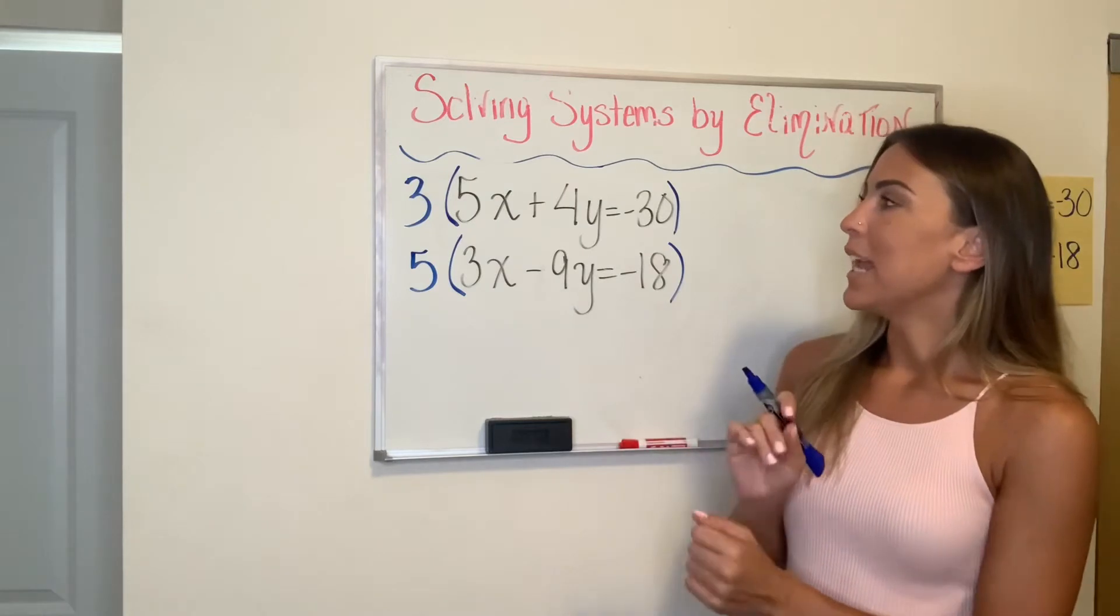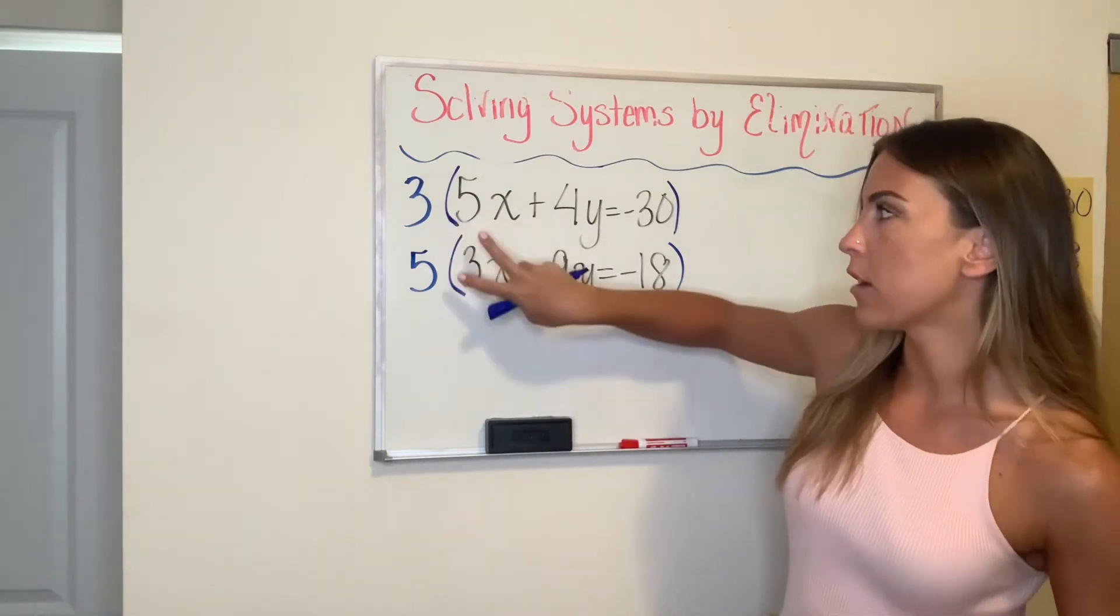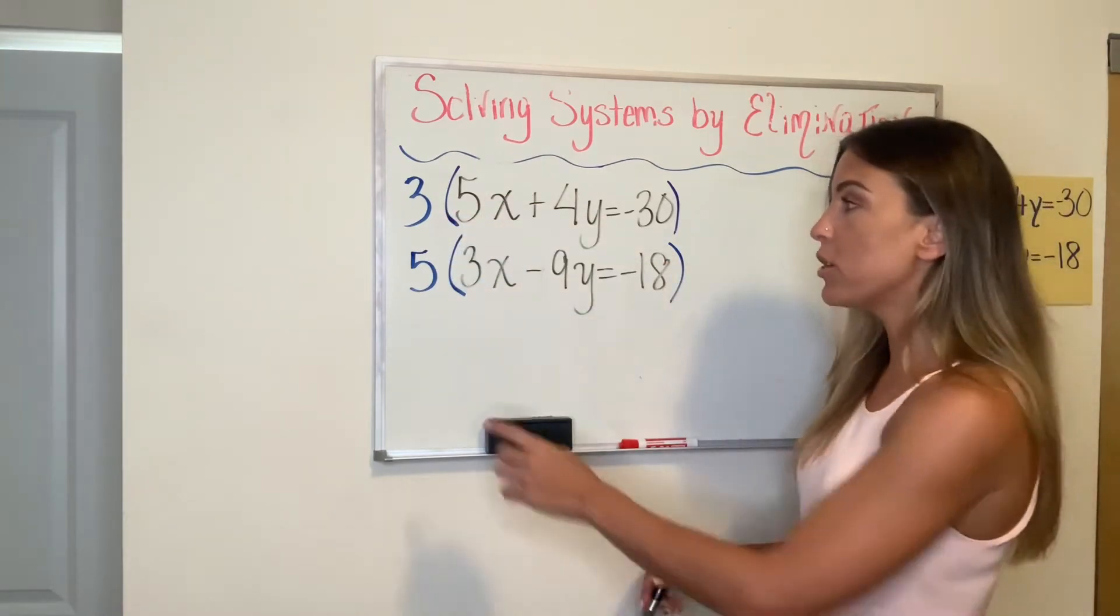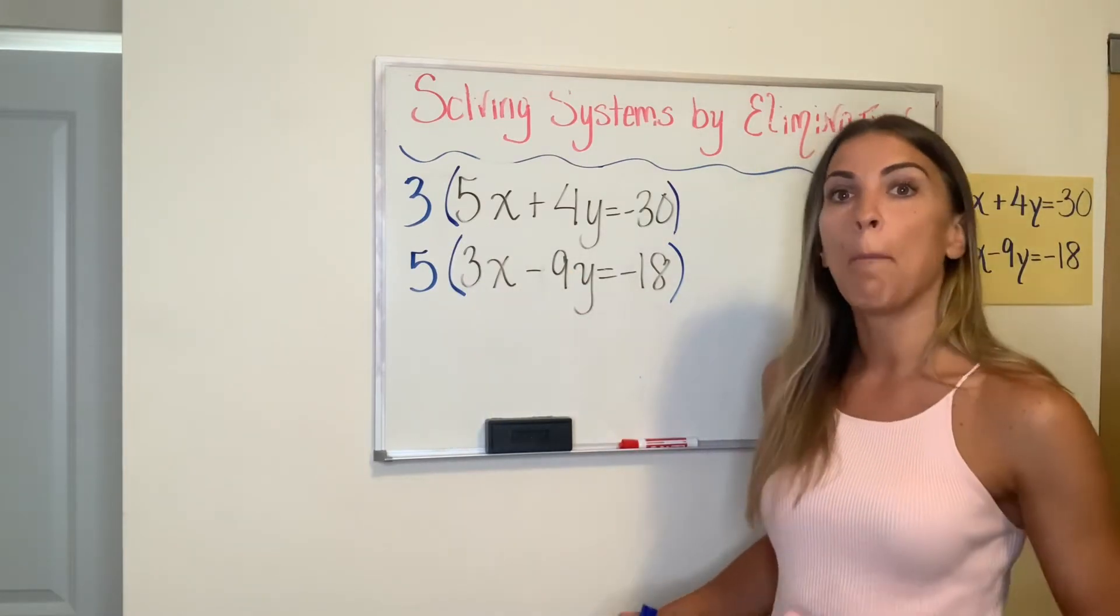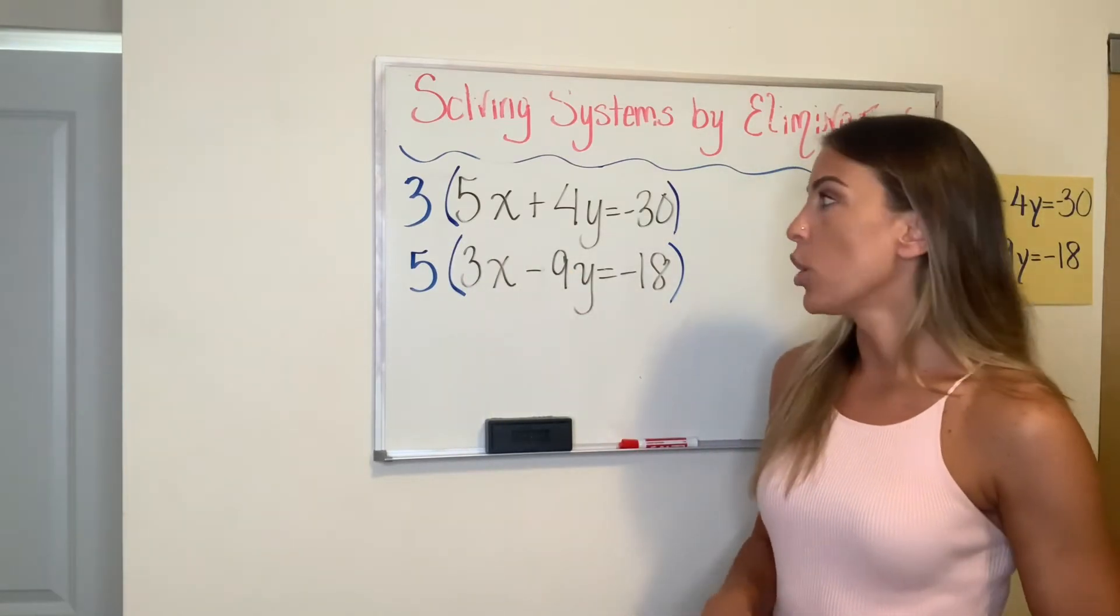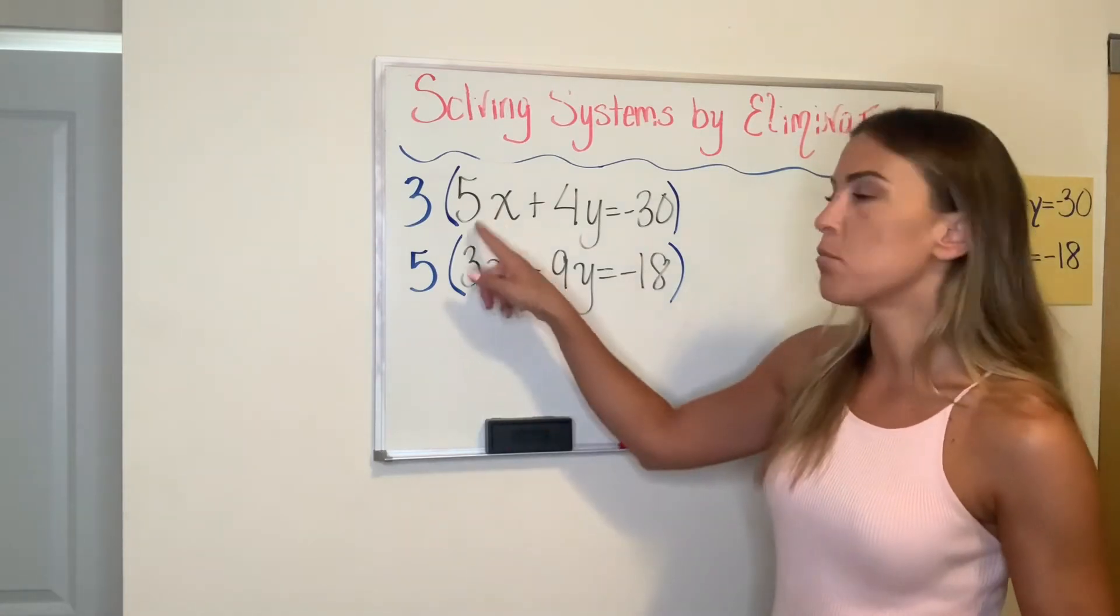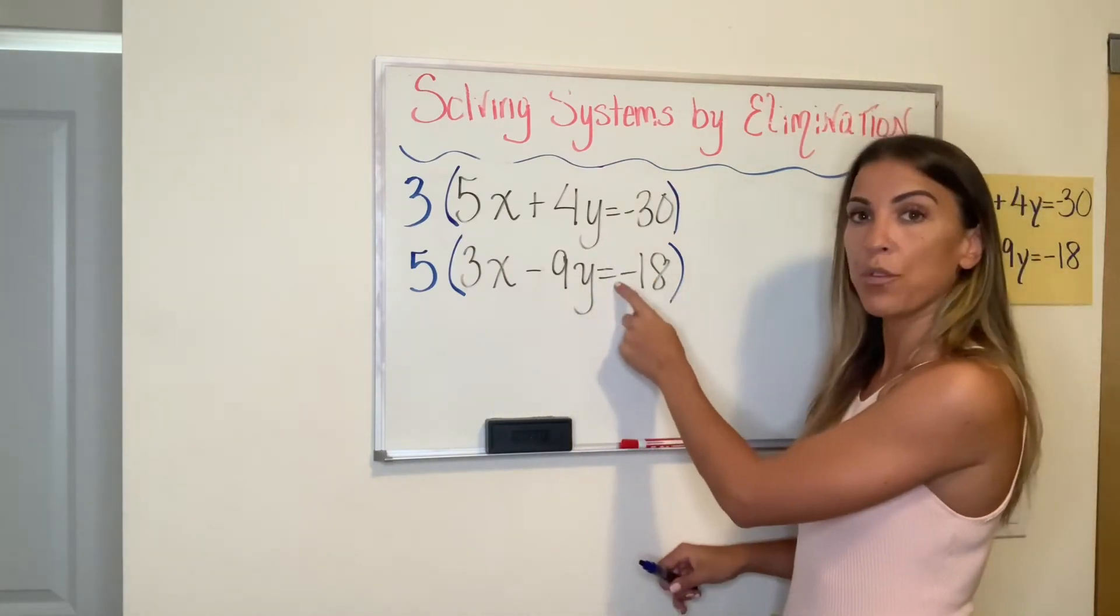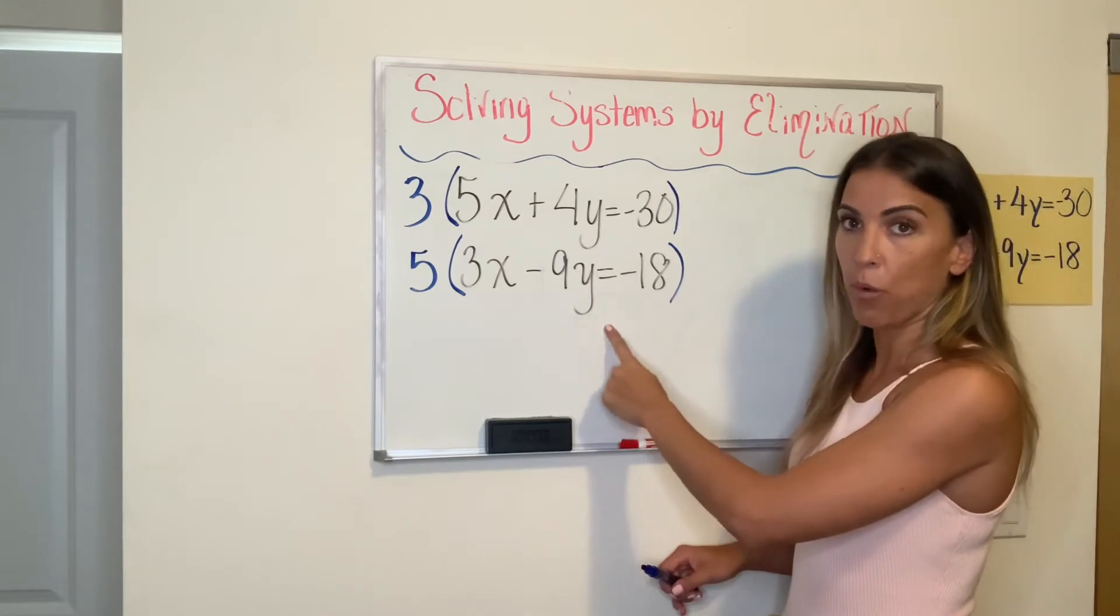Now it's a coincidence that the least common multiple of these two numbers happens to be their product. So you might be thinking, can I always just do this? You can. You can always just multiply by the opposite number. It won't necessarily be the least common multiple, but it will be a common multiple. So if maybe you struggle with least common multiple, one shortcut I can give you is just multiply by the opposite number. So for example, if you wanted the y's to have the same coefficient, you can multiply the top equation by nine and the bottom equation by four.